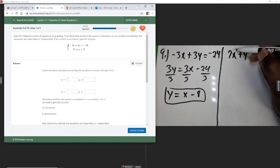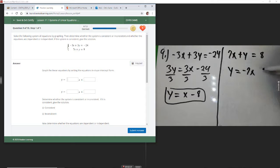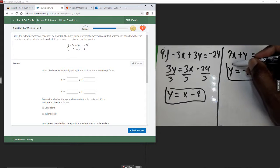And then over here, we just have to move x over. It's going to change signs, so we get y equals negative 7x plus 8. Okay, and that one is solved for y.